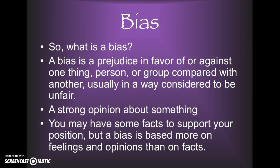So what is a bias? A bias is a prejudice in favor of or against one thing, person, or group compared with another, usually in a way considered to be unfair. It's a strong opinion about something. You may have some facts to support your position, but a bias is based more on feelings and opinions than on facts.